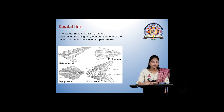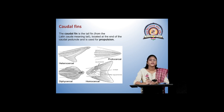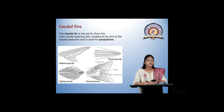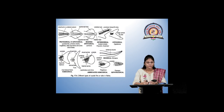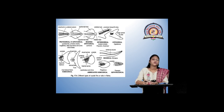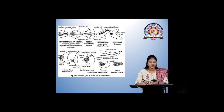Next is the caudal fin, also known as the tail fin, located at the posterior end and used for propulsion — moving forward in the water. We can see various types of caudal fins: heterocercal, protocercal, diphycercal, homocercal, etc. There are also modifications like the protocercal, which is also known as diphycercal, then modified diphycercal, heterocercal, hypocercal, homocercal, abbreviated homocercal, and gephyrocercal.